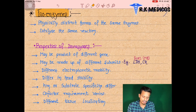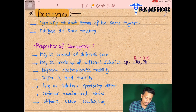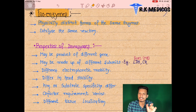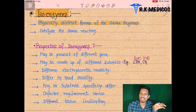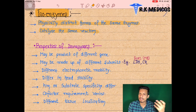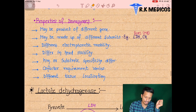An isoenzyme is basically a physically distinct form of the same enzyme. They are different types of formats of the same enzyme appearing in different parts of our body, but they are catalyzing the same reaction, just in a different way.